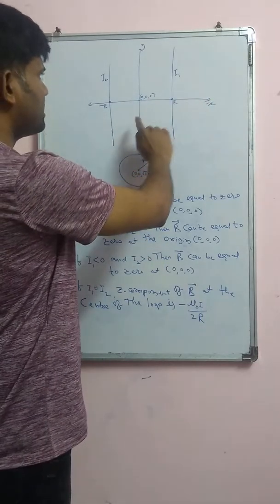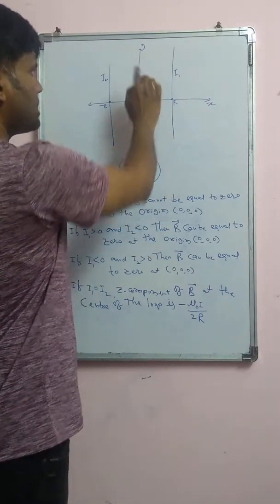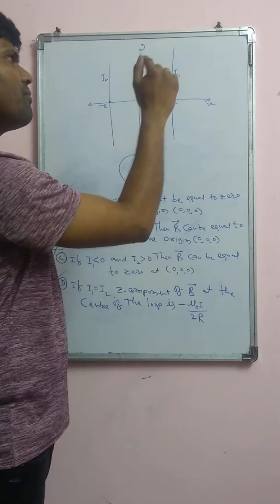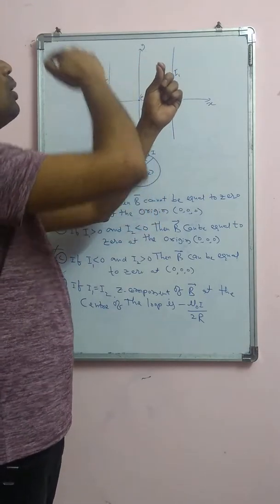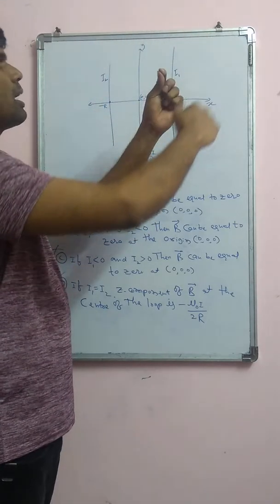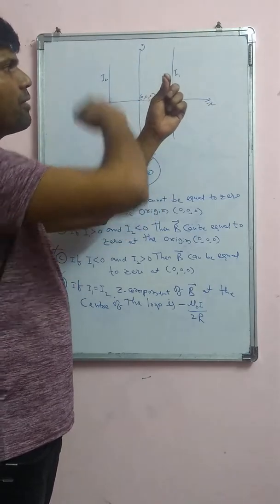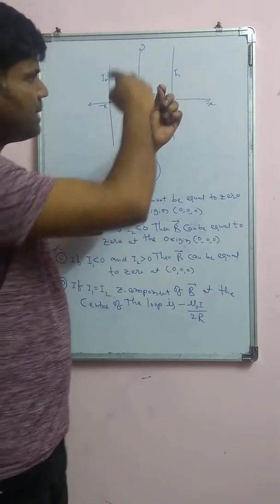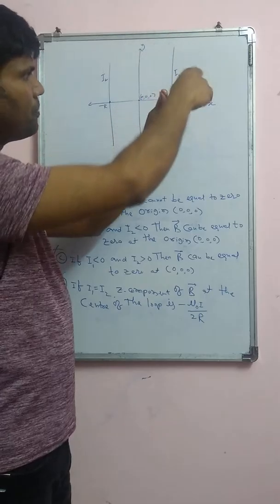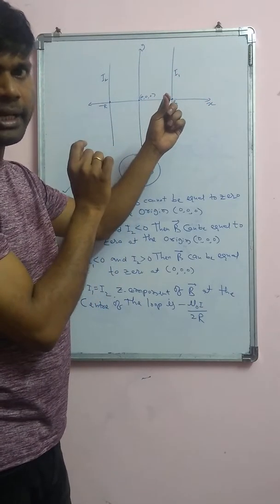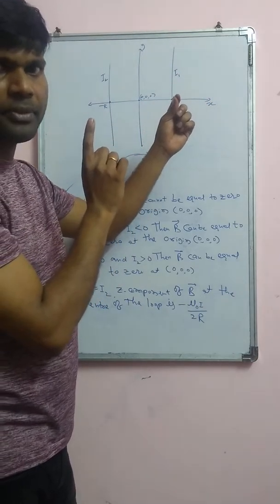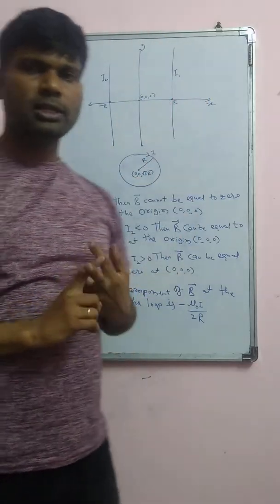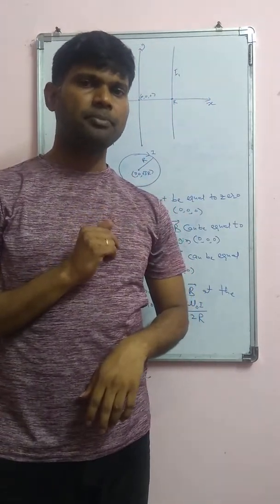So this is the x-axis, this is the y-axis, and this is the z-axis. The circular loop of radius r is located somewhere up along z. In this circular loop, the current is i, flowing in the clockwise direction. These are the key pieces of information given in the problem.